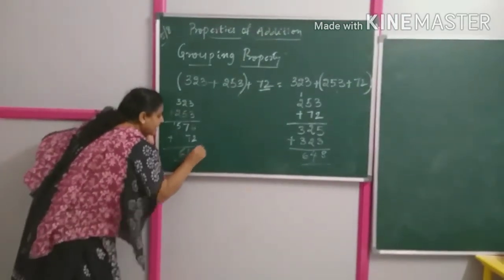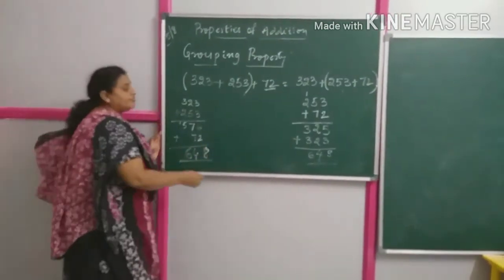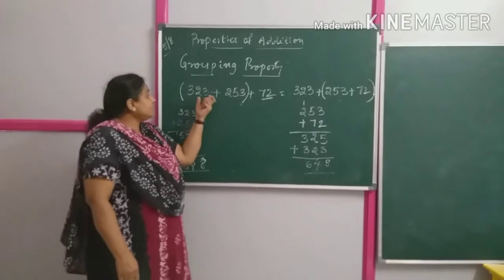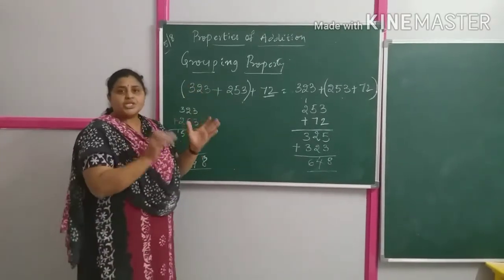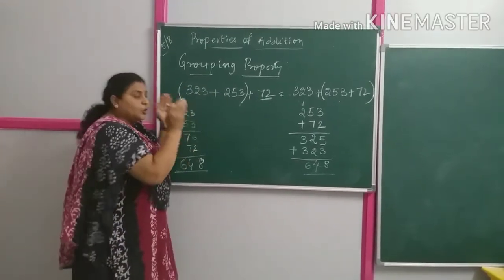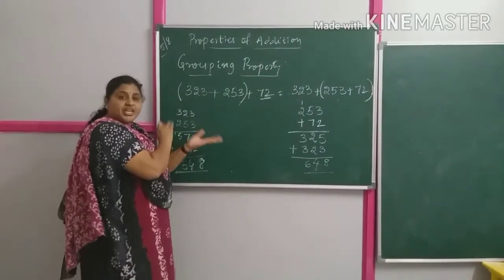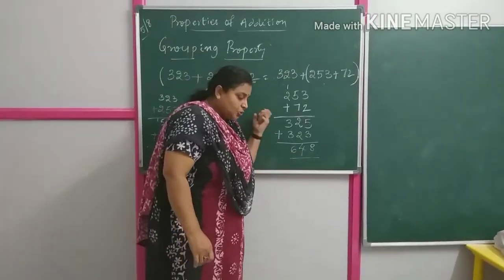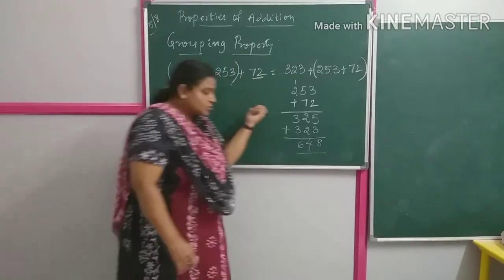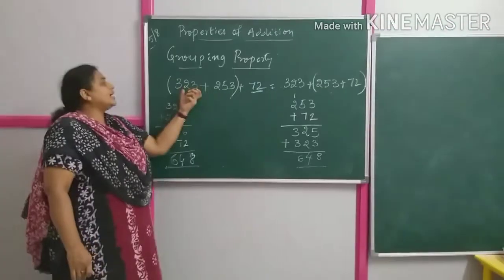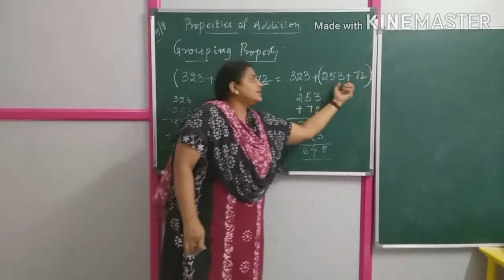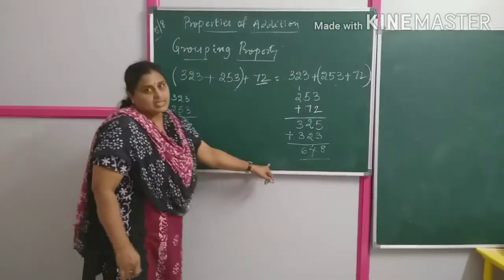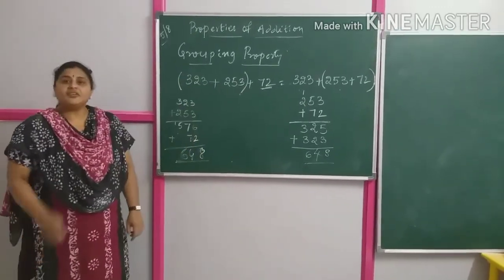Comparing the two results: both answers are 648. This means that even if you group numbers differently — first two together or last two together — the answer remains the same. That is the grouping property of addition. In any grouping arrangement, you still get the same answer.